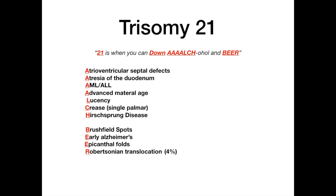The reason Robertsonian translocation is included is that in 4% of patients with trisomy 21, the genetic cause is actually not non-disjunction but a Robertsonian translocation. It's easy to remember that it occurs in 4% because both 'Down' and 'beer' have four letters. In 4% of patients, Robertsonian translocations are the responsible genetic cause.